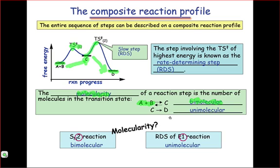However, the conversion of C to D, which involves only a derivative of molecule C in its transition state, transition state 2, is a unimolecular step.